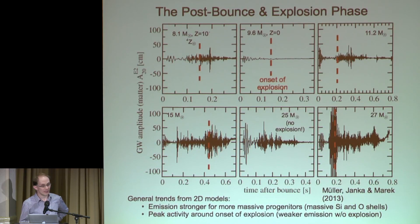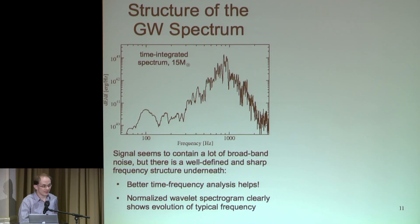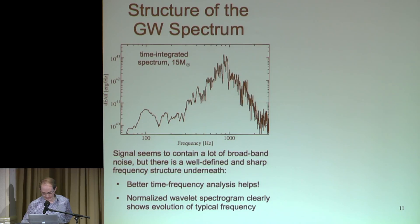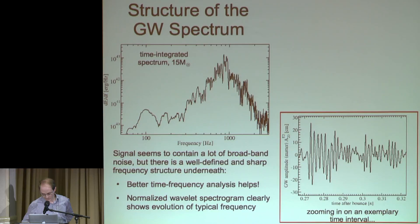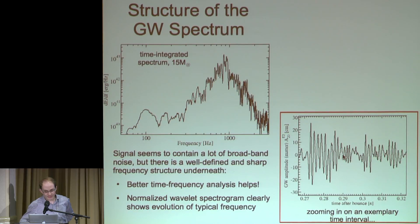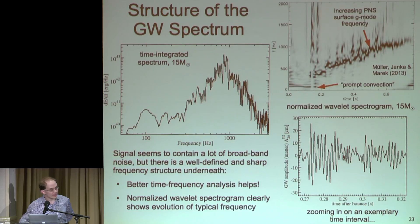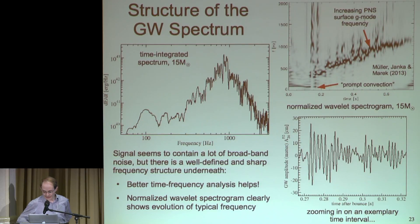The signal looks pretty chaotic and not very organized, but there is some deeper structure. The integrated spectrum also seems very broad-banded with not much obvious structure. But if you look more closely at part of the real-time signal, you find indications that while there are stochastic amplitude variations, the frequency seems quite robust. In the time-frequency domain, using something like a wavelet decomposition, you actually get quite a nice structure — quite narrow-banded emission, hidden behind this stochastic modulation of the amplitude.